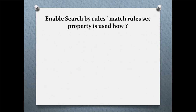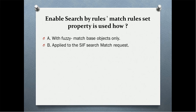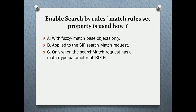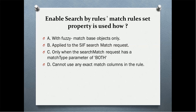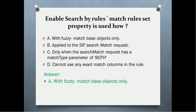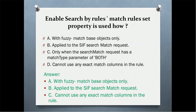Enable search by rules match rule set. The answer is: with fuzzy match base object only, it is also applied to see if a search match request cannot use any exact match column in the rules. So 'enable search by rule' is used with fuzzy natural base object, applied to search match requests that cannot use any exact match column in the rule.